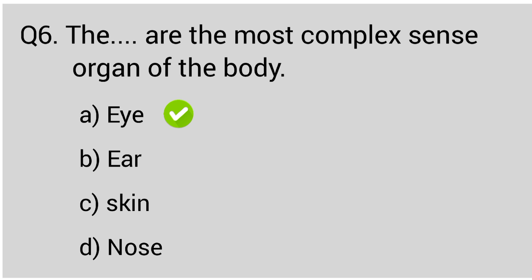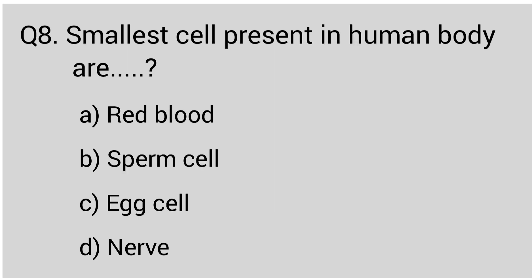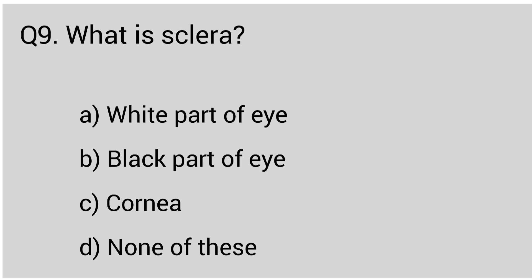Question number seven: which of the following is known as the window of the brain? The correct answer is option B, eye. Question number eight: the smallest cell present in the human body. The correct answer is option B, spur cell. Question number nine: what is sclera? The correct answer is option A, white part of the eye.